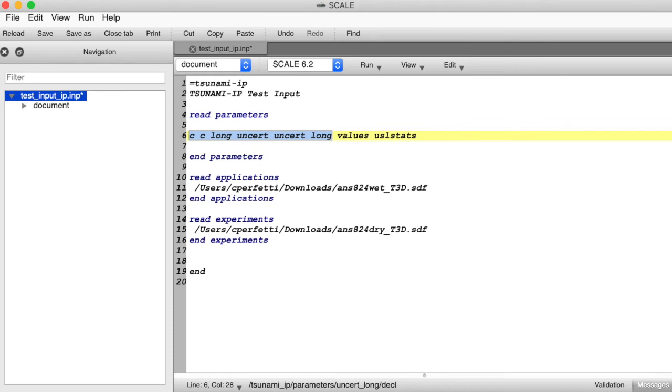The regular tsunami 1D, 2D, and 3D codes will also perform the standard sandwich equation calculations by default, and you'll notice that the tsunami IP output for this information is actually identical to the tsunami 3D code's uncertainty information output when performing a regular sensitivity coefficient calculation.